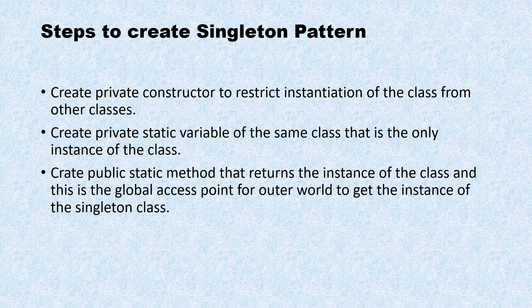It's public because you want global access, and static because you want to call it via the class name itself — you don't need to instantiate the class externally. The outside world cannot use the new keyword or other approaches to create an instance of the singleton. These are the three steps to follow in all singleton approaches.